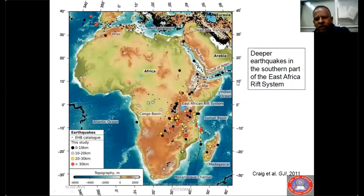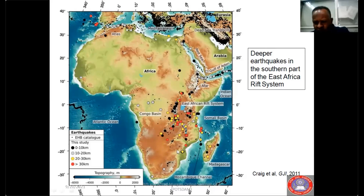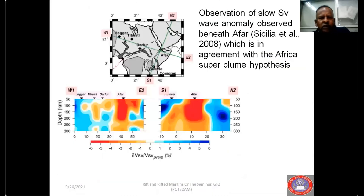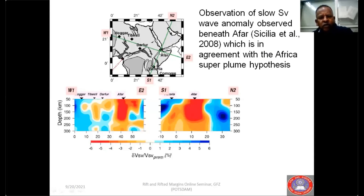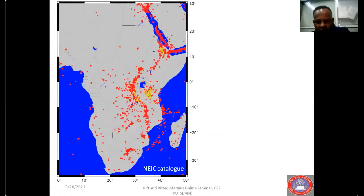In the East African rift, earthquake depth increases as you go from the Afar region down to the Okavango Delta, and magnitude also increases likewise, while magmatism decreases in that direction — from Craig et al. 2011. From tomographic work, the Afar region is known to have very large velocity anomalies because of the huge molten intrusion there. The cross-section W1E2, from Hoggar to the south of Afar, and the section S1 to N2 along the East African rift system, both show that Afar remains the most melt-dominated region.